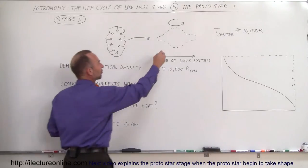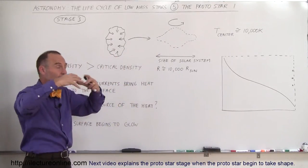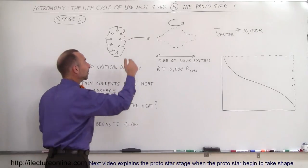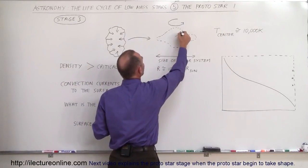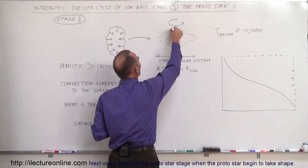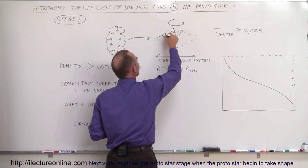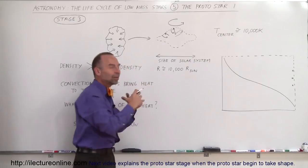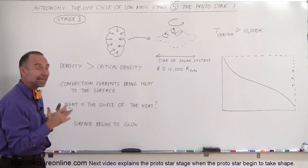Heat begins to transfer from the interior where the pressure builds up to very high levels. We start getting convection currents where the heat gets pushed towards the edges and the cooler edges fall back in. Just like what we see in the outer regions of the sun today, these convection currents bring heat from the center towards the edges.